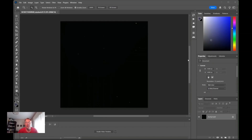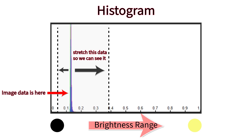When you stack your light frames, the result is what we call linear data — also called raw data. Your camera captured all that beautiful detail, but it's compressed into such a narrow brightness range that it's essentially invisible to your eyes. We can see it on the histogram — all the data is crammed onto the left side. That's your nebula, your galaxy, your stars — all hiding in there. Stretching is the process of redistributing this data through the full brightness range so we can actually see what we captured.